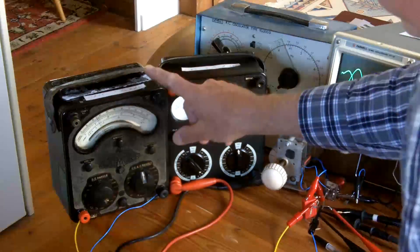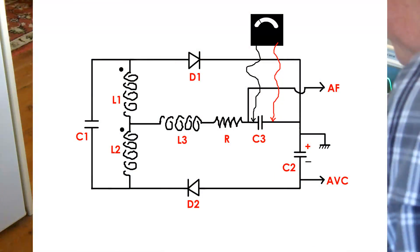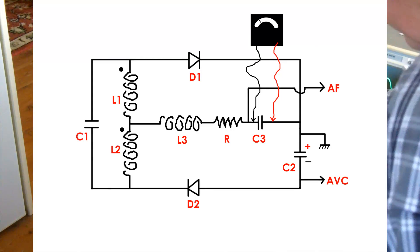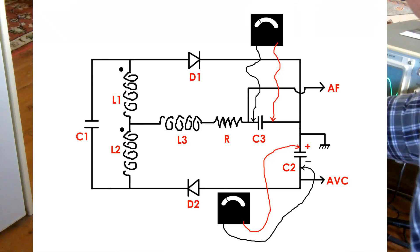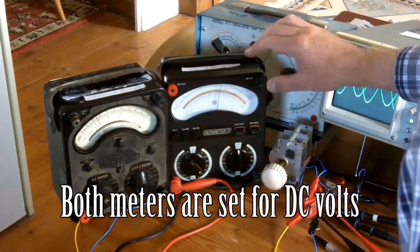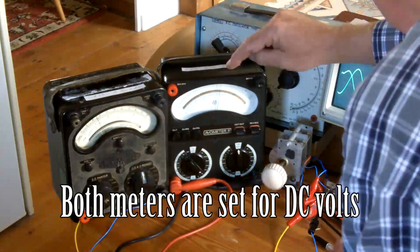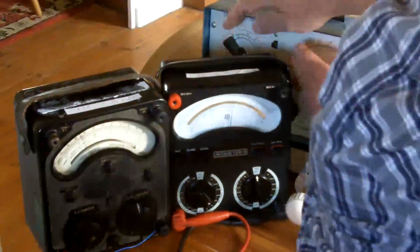Now I have this meter connected across C3 where the audio is taken from. And I have this meter connected across C2 where the automatic voltage control is taken from. And I am just going to adjust the frequency and just keep the automatic voltage line stable hopefully.